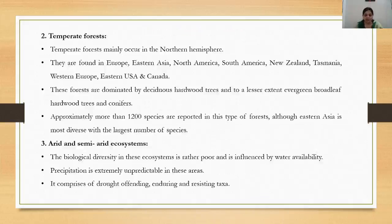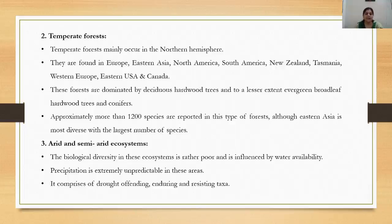The second type is the temperate forest, which mainly occurs in the northern hemisphere, found in Europe, Eastern Asia, North America, South America, New Zealand, Tasmania, Western Europe, Eastern USA, and Canada. These forests are dominated by deciduous hardwood trees and, to a lesser extent, evergreen broadleaf hardwood trees and conifers. Deciduous plants shed their leaves in a specific season, while evergreen plants retain leaves all year. Conifers mainly grow at higher altitudes. Approximately 1,200 species are reported in this forest type, with eastern Asia being the most diverse.